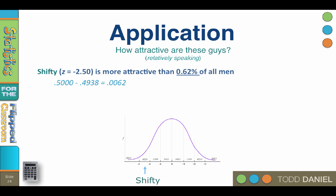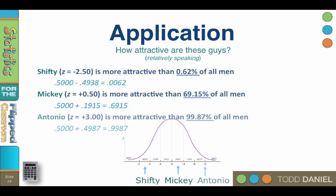Now Mickey with his z of positive 0.50 is more attractive than 69.15% of all men, and Antonio with his z of positive 3.00 is more attractive than 99.87% of all men.